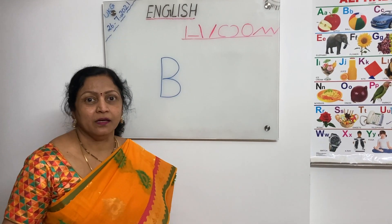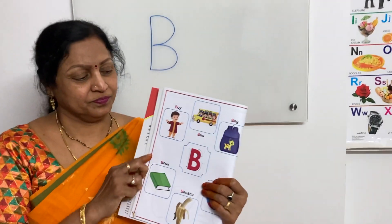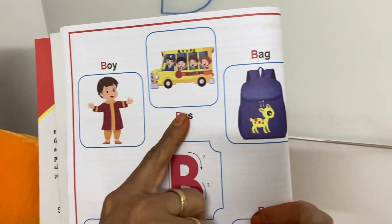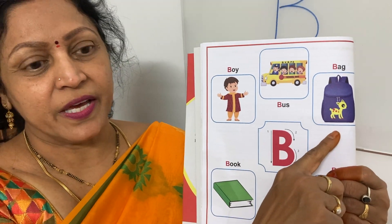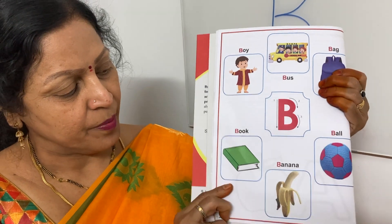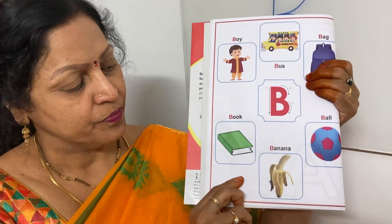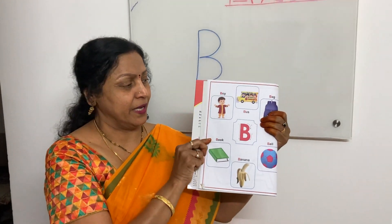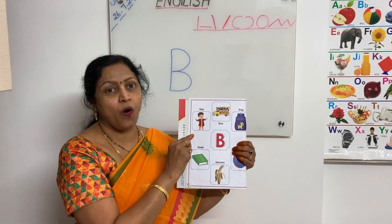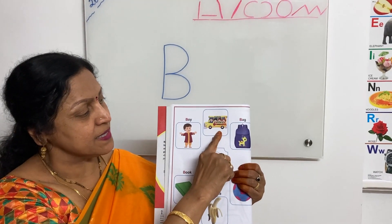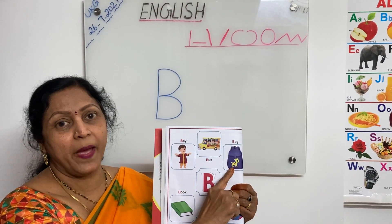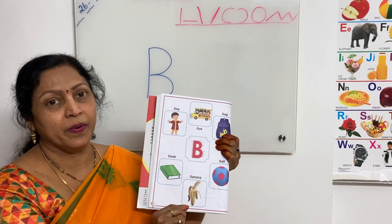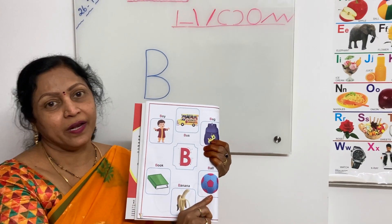Now we will learn the related pictures. B for ball, B for bus, B for bag, B for book, B for banana, B for ball. B for ball, B for bus, B for bag, B for book, B for banana, B for ball.